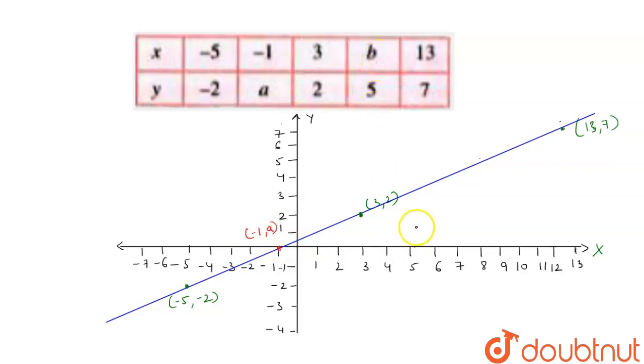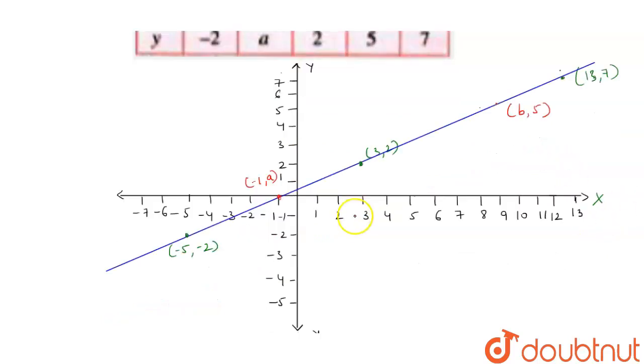And we have b, 5. So our y is equal to 5 which is here. If we extend this to our line we see that it will lie somewhere here. So our point is b, 5.